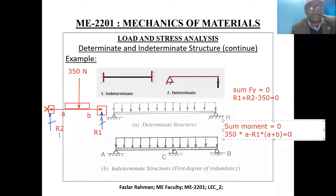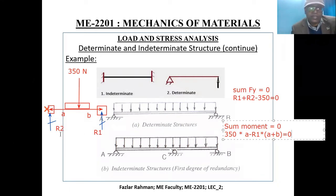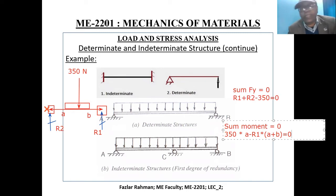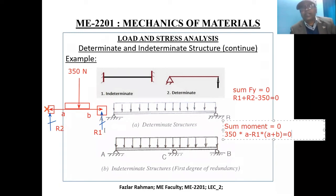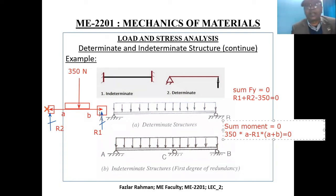Then you put R1 and R2 values back in. So this whole picture is called a free body diagram. When you have a beam, first you need to figure out the reaction forces, and then you have further calculations.